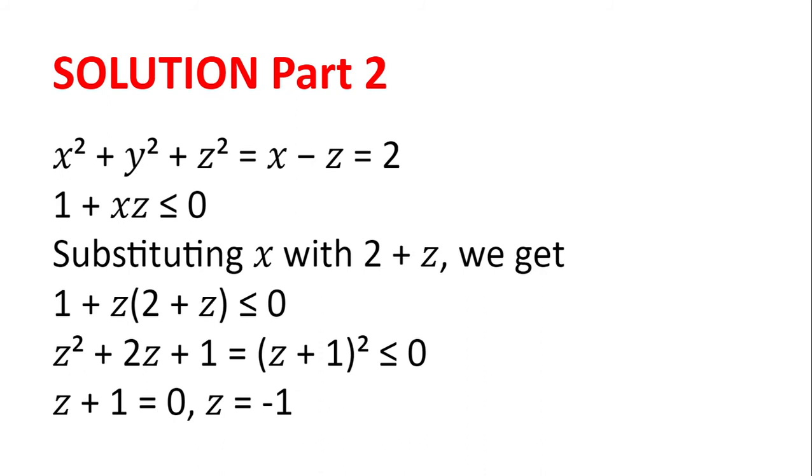Now, substituting x with 2 plus z, we get 1 plus z multiplied by 2 plus z is less than or equal to 0. We expand this to get z squared plus 2z plus 1, which is the same as z plus 1 squared is less than or equal to 0.